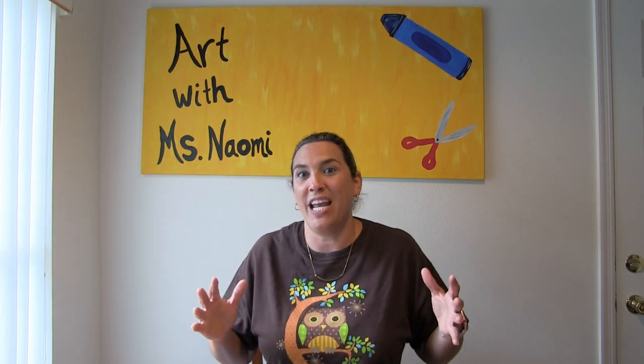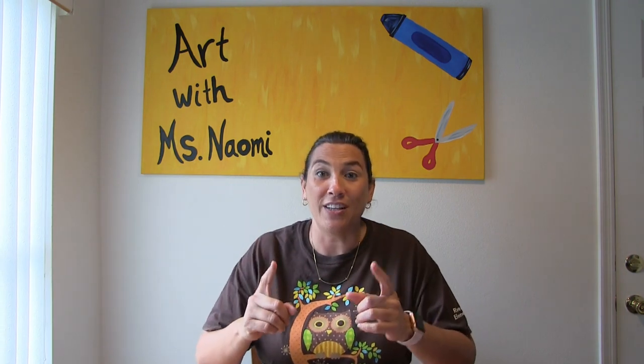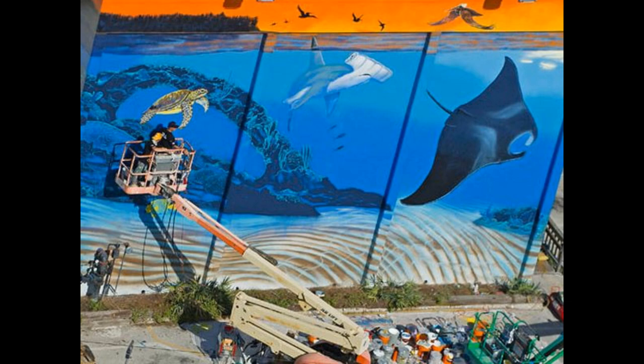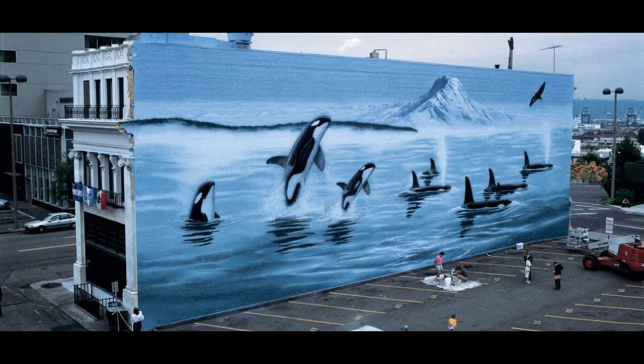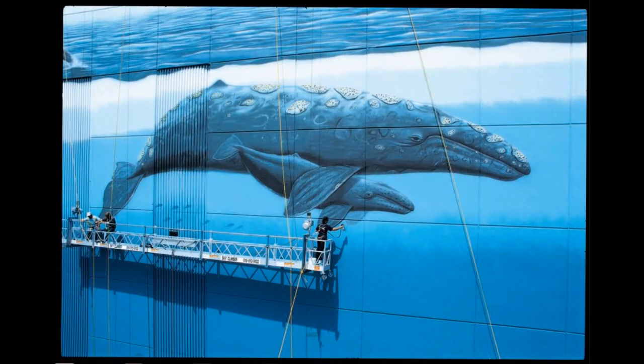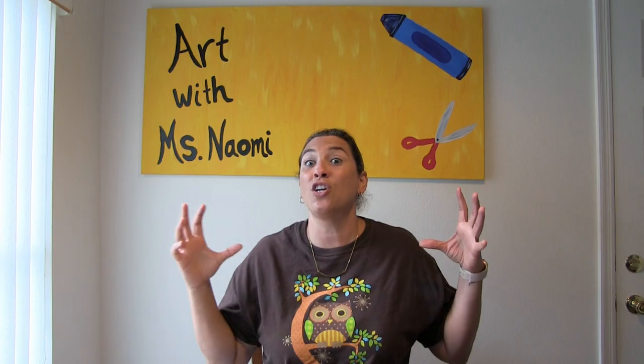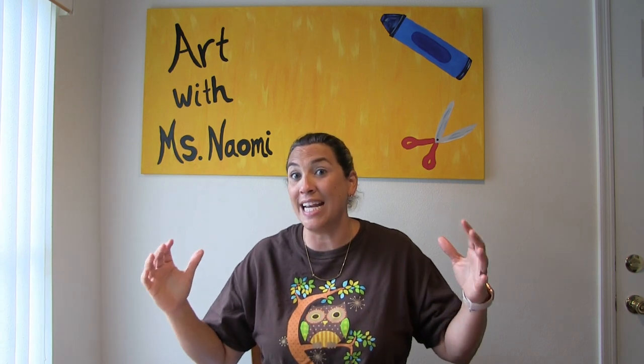It is important that we take care of our Earth and we talk about taking care of our Earth. There is an artist out there, his name is Robert Weiland, and he's known for painting murals and talking about ocean conservation. He's known as an artist, he's known as a scuba diver, he's known as a photographer, and he's known as an environmentalist.